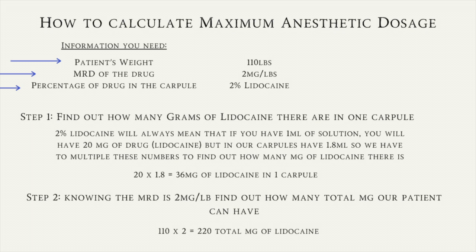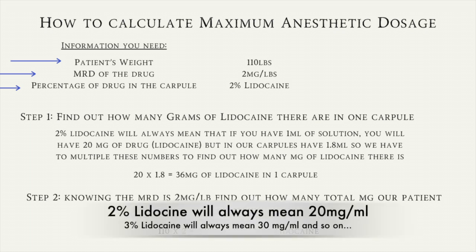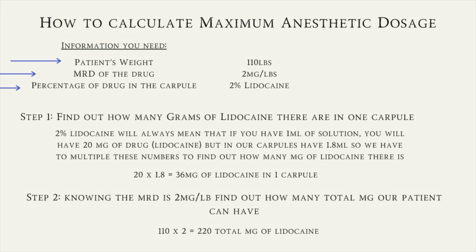The percentage of drug in a carpule — whether it's 2%, 3%, or 4% lidocaine — is out of 100, so 2% lidocaine always means 2 milligrams of drug per milliliter of solution, 3% means 3 milligrams, and so on. Step one is to find out how many milligrams of lidocaine are in one carpule. One carpule is 1.8 milliliters of solution, not just 1 milliliter. So we multiply 20 milligrams per milliliter by 1.8, giving us 36 milligrams of lidocaine in one carpule.